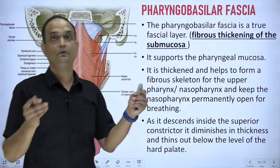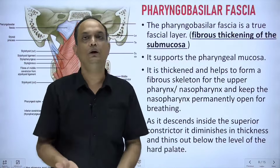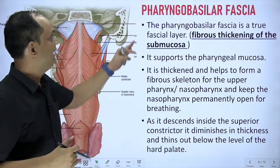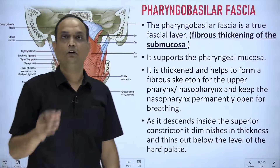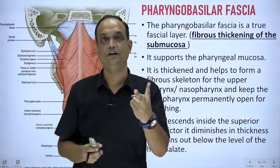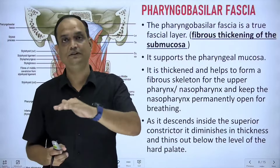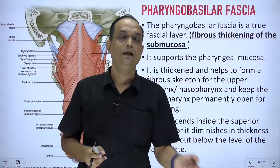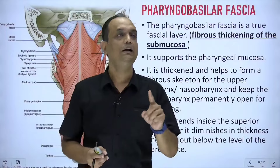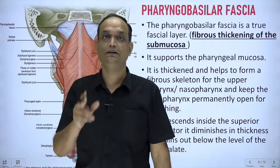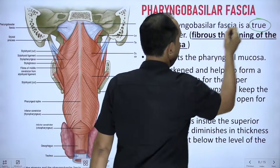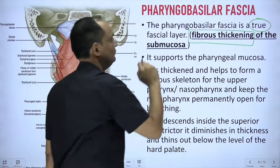Outside the mucosa you have the submucosa, but in the pharynx there is a modification of the submucosal layer known as pharyngobasilar fascia. When talking about the pharyngeal wall, you read two fasciae: pharyngobasilar fascia is the inside fascia and buccopharyngeal fascia is the outside fascia. Buccopharyngeal fascia is not a true fascia, while the pharyngobasilar fascia is considered a true fascia of the pharynx — it forms a fibrous thickening of the submucosa.